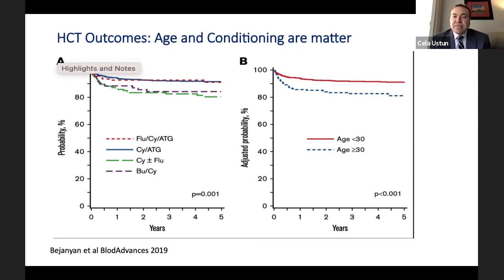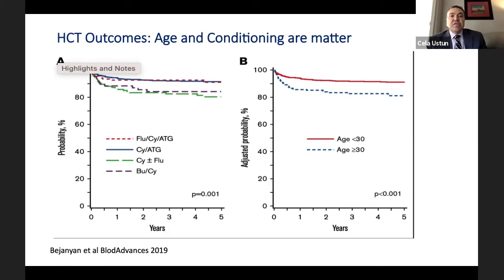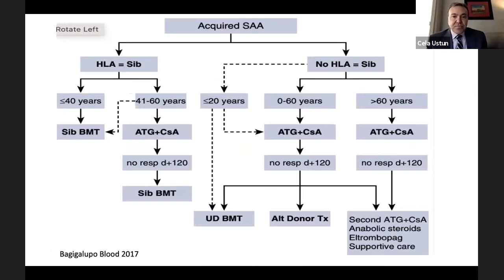European data confirms age matters — as age goes up, transplantation outcomes go down, and the unrelated group is slightly lower than siblings in age-matched curves. Another study published two years ago also showed that patients older than 30 years had worse outcomes than those younger than 30. Age matters in transplantation outcomes after allogeneic transplantation for severe aplastic anemia — but both curves still show 75% to 95% survival, which are very high outcomes. What chemotherapy or radiation therapy we use before transplantation also makes a difference.